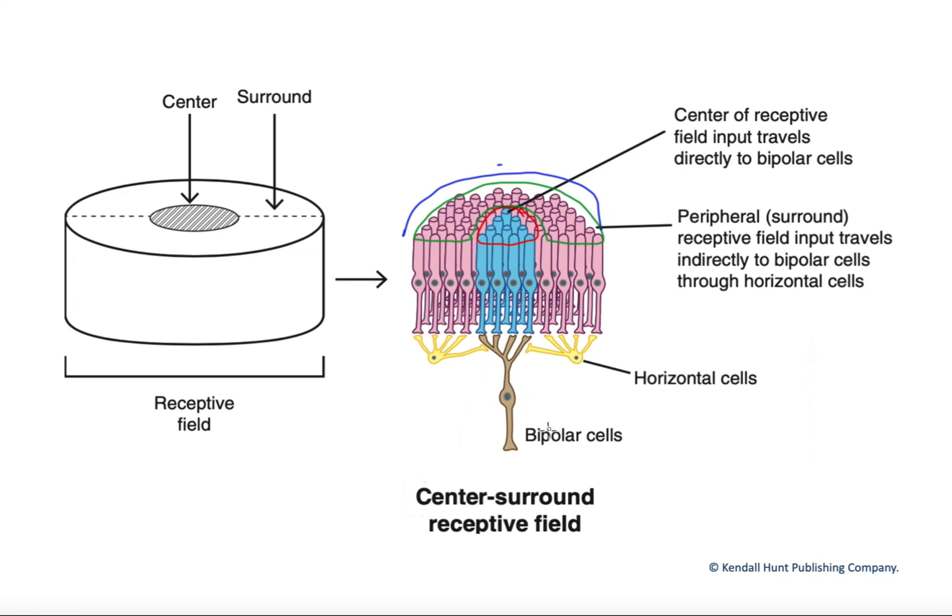You end up with bipolar cells that are divided up into two groups: on-center bipolar cells and off-center bipolar cells.